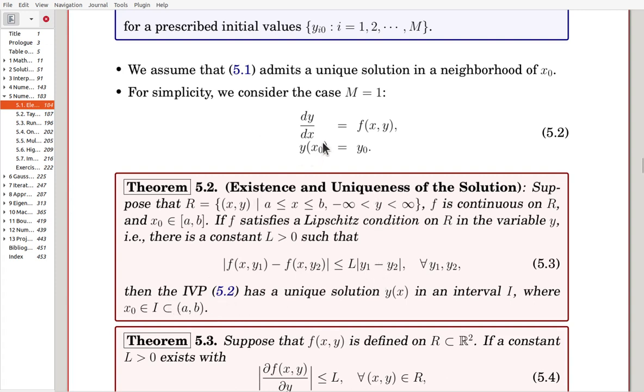These conditions are satisfied, then the initial value problem, when m is 1, has a unique solution in an interval I. I is a sub-interval of the original interval, of course, including x0.